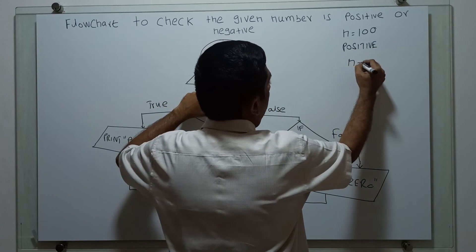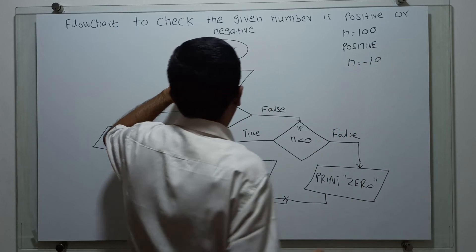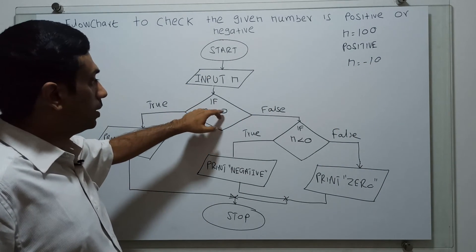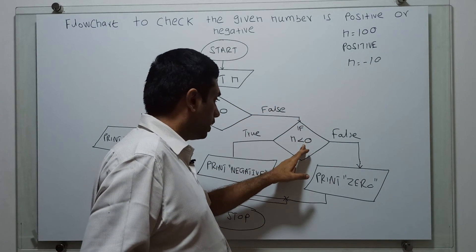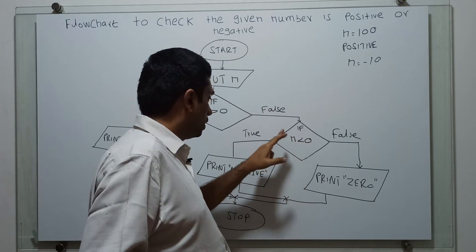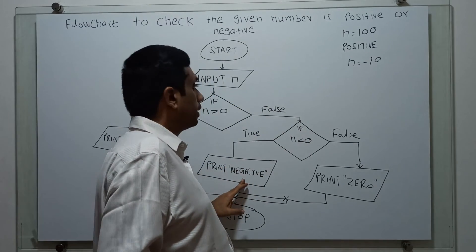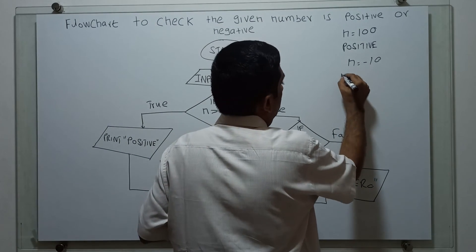In another case, I am giving n equal to minus 10. It will check n greater than 0 — that is false. It will check again if n less than 0 — that is true. That will print negative. So the output is negative.